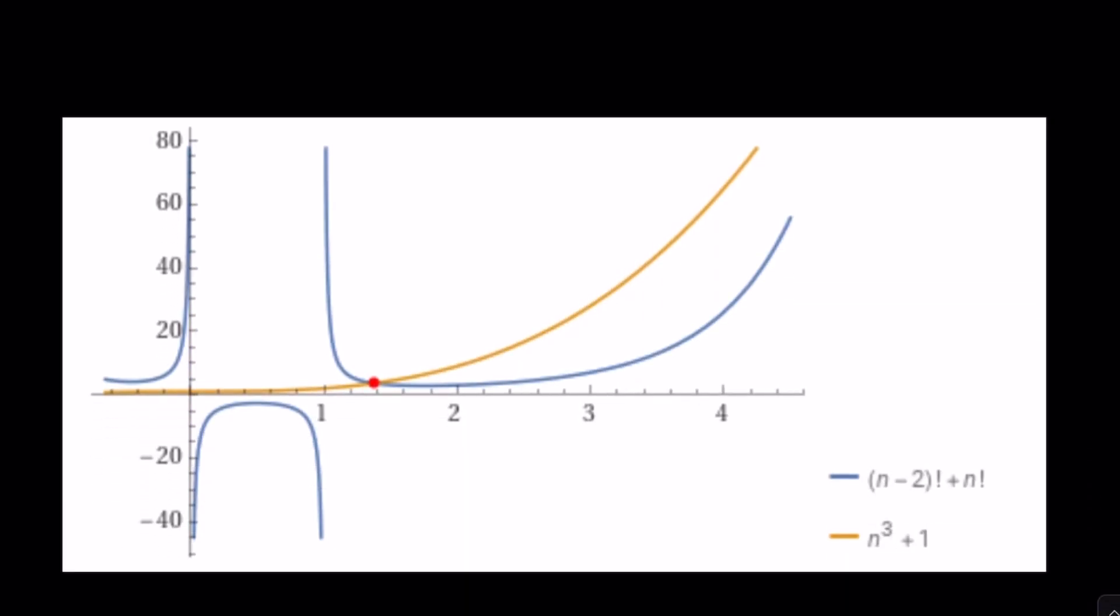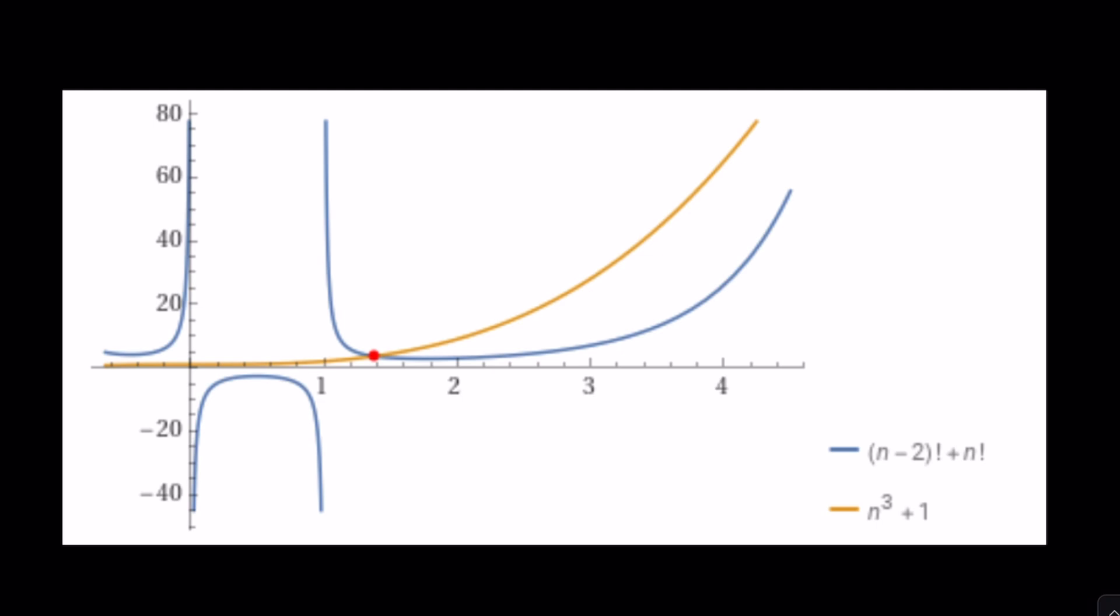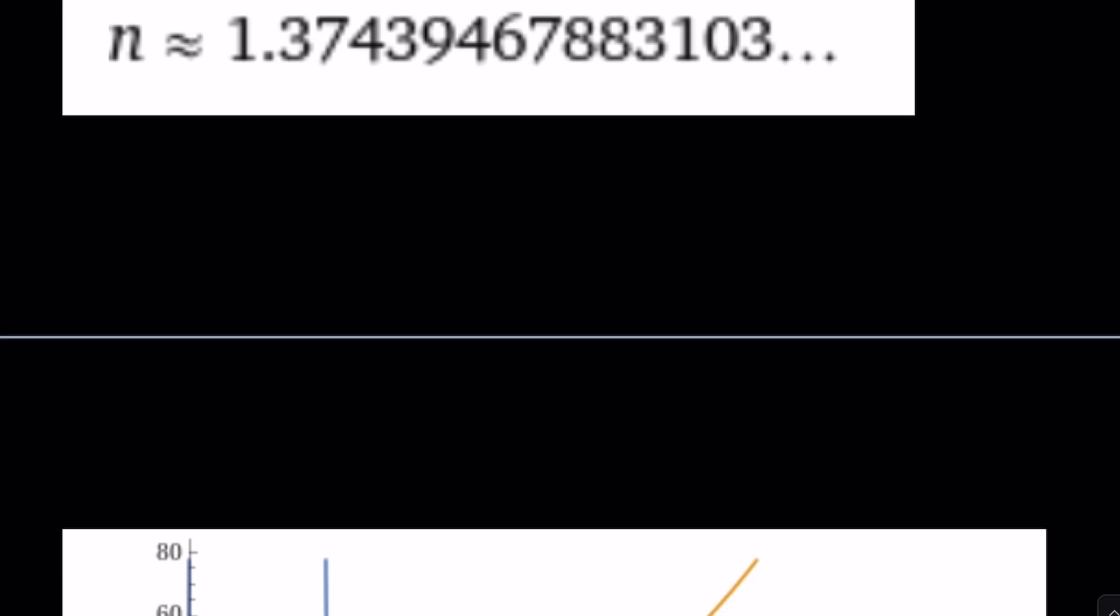Well, here's the thing. The factorial function can be defined for all real numbers using the gamma function, which is some type of integral, whatever. But for integers, it's a special case, basically. Obviously, this graph will also include integer solutions. However, this graph, as it is, does not show you, because that's what Wolfram Alpha provided. And there's a single intersection point, as you can see, 1.something. 1.37 something. Yes. With the gamma function for real numbers, you can get that solution.